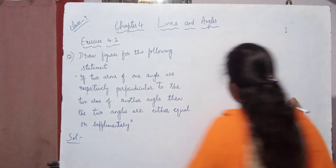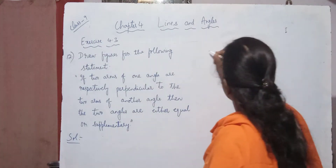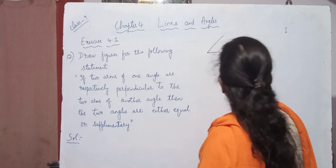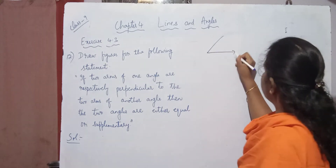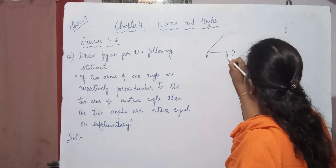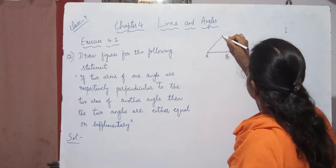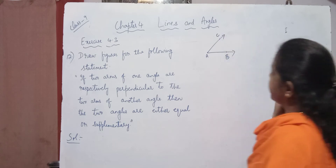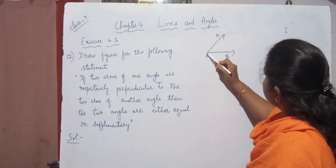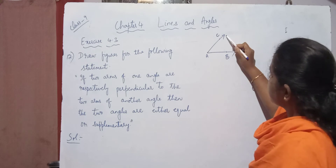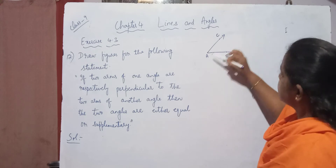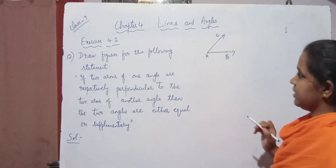Here there are two angles, so let us draw one angle. Suppose let this be the angle. I am taking this as A, this has some point B, this has some point C. This is one angle. So this is the first arm — AC is the first arm and AB is the second arm.